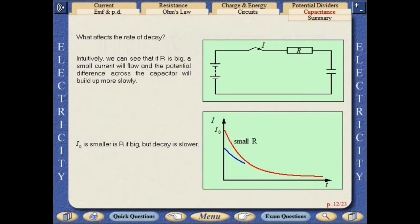What affects the rate of decay? Intuitively, we can see that if R is big, small current will flow, and the potential difference across the capacitor will build up more slowly. I0 is smaller if R is big, but decay is slower.